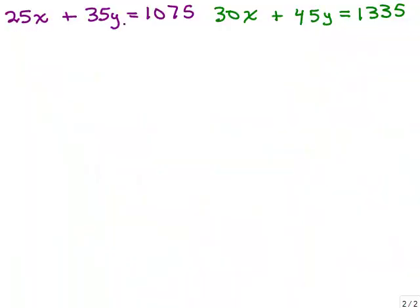Here's a little trick I use. If I notice there's a common factor in all of the terms on both sides of the equation, I'm going to divide. 5 goes into all of these numbers in the first equation. In the first equation, I'm just going to divide each side by 5, which means each term gets divided by 5. And that will give me 5X plus 7Y equals 215.